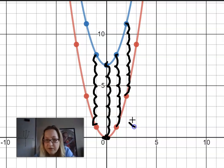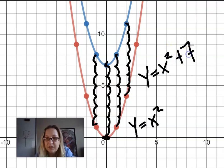So if the parent function is y equals x squared, the blue parabola must be y equals x squared plus 7. So the only thing that changed was the c value and not the a value.